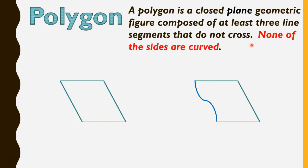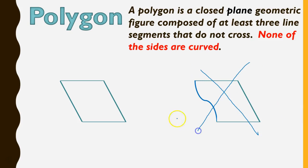Another important piece of information is that none of the sides are curved — they have to be straight lines. You can see in these two examples here: all of these sides are straight, so this would be a polygon. But this right here is a curve, which would make that not a polygon. You must have straight lines, so this could not be a polygon, but this is.